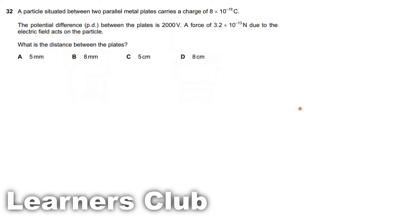Question 32. A particle situated between two parallel metal plates carries a charge of 8×10⁻¹⁹ coulombs. The potential difference between the plates and a force of 3.2×10⁻¹³ newtons due to the electric field acts on the particle. We need to find the distance between the plates.